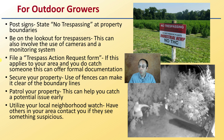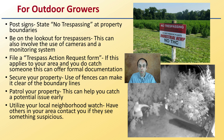Secure your property. Use of fences can make boundary lines clear. Patrol your property, as this can help you catch a potential issue early. Utilize your local neighborhood watch and have others in your area contact you if they see something suspicious — be part of that local network. All of this is advised to try to limit the negative impact other humans can have on your cannabis crop.